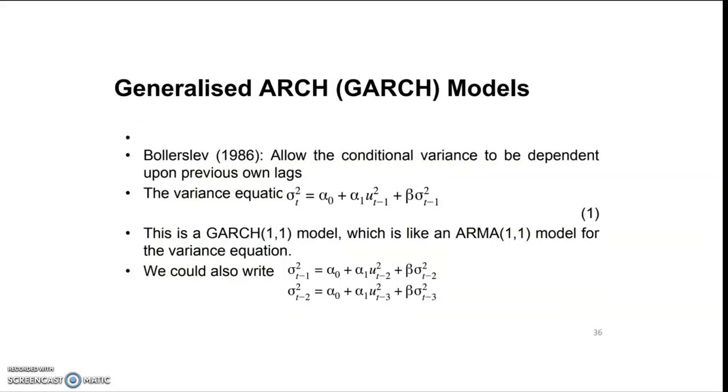Now we discuss generalized ARCH—that is, generalized autoregressive conditionally heteroscedastic models. These models were developed by Bollerslev in 1986, which allow the unconditional variance to be dependent upon previous own lags.